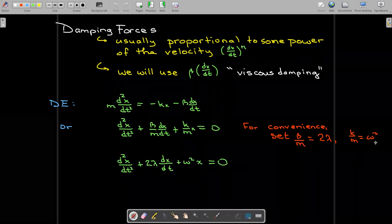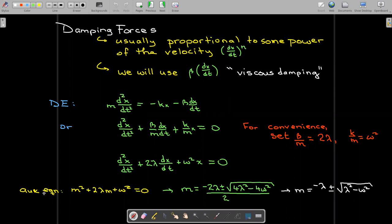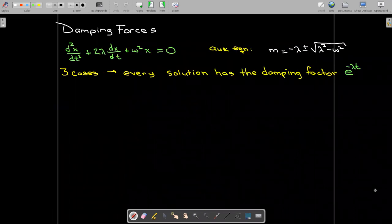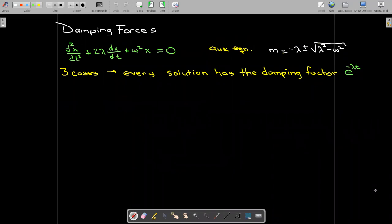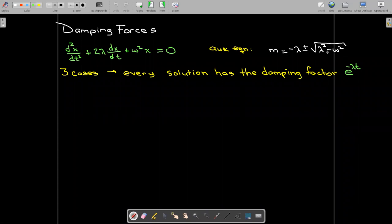So our new differential equation would have this form. And our auxiliary equation now is going to give us, remember m is just the dummy variable for the auxiliary equation, it's not mass. So m is going to be negative lambda plus or minus radical lambda squared minus omega squared. That means there's going to be three cases based on what value we have under the radical sign. We've seen this before.